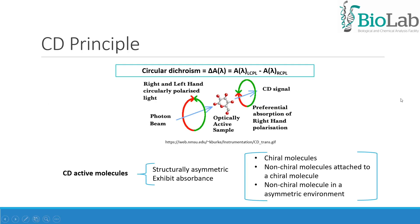Circular dichroism spectroscopy is a form of light absorption spectroscopy that measures the difference in absorbance of right and left circularly polarized light. This effect will occur when a chromophore is chiral, optically active, either by being intrinsically chiral by reason of its structure, or by being covalently linked to a chiral center, or by being placed in an asymmetric environment.